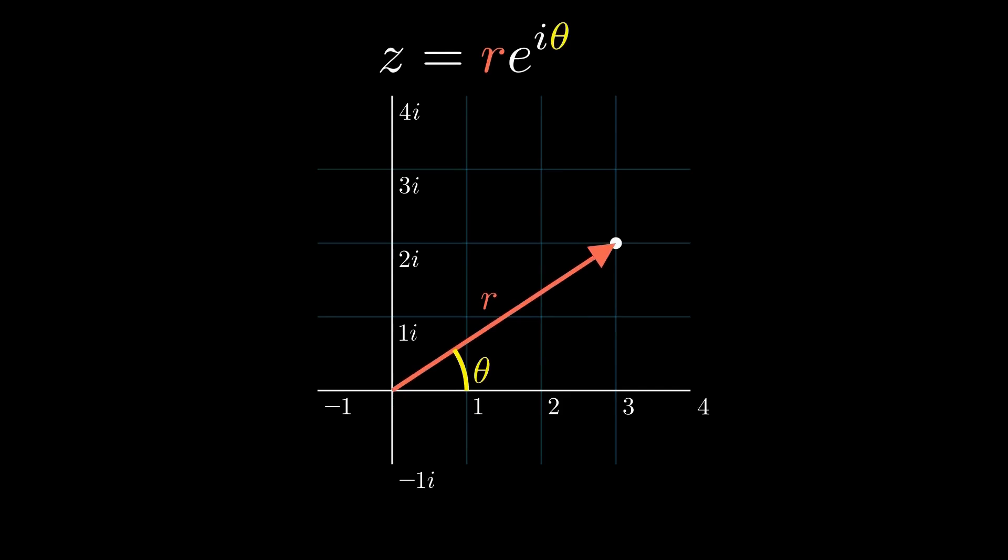The formula is z equals r times e to the i theta. R controls the distance. Changing it only makes the number grow or shrink. Theta represents direction. Changing it does not change the size. It simply rotates the number.